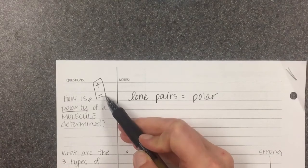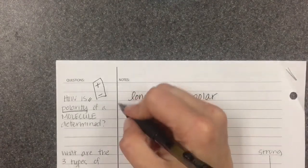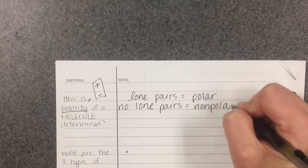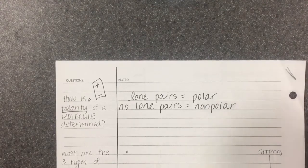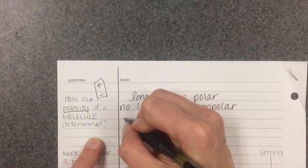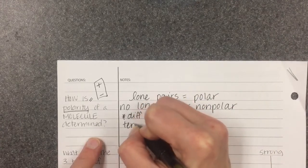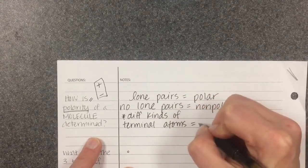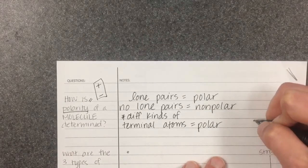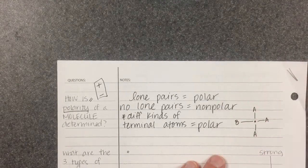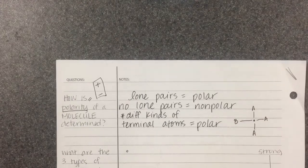Another way in which something can be polar is if you have different kinds of terminal atoms. For example, if I have a central atom with three atoms of element A and one atom of element B, I'm not going to have the same number of electrons on all sides — B might have more or fewer than A. Because I don't have a symmetrical molecule with the same number of electrons spread throughout, it's going to be polar.